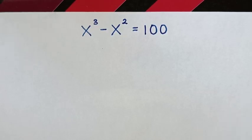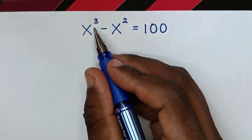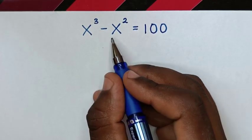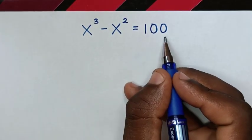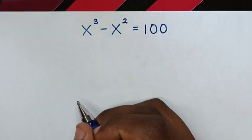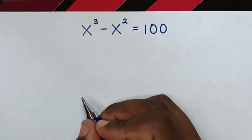Hello. How to solve x power 3 minus x power 2 is equal to 100, to find the value of x.